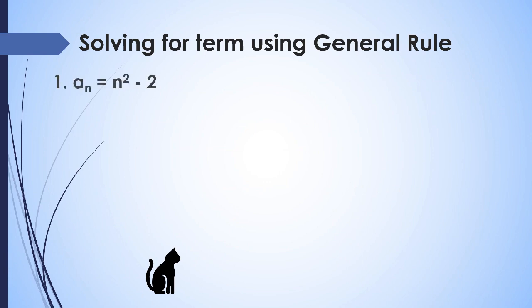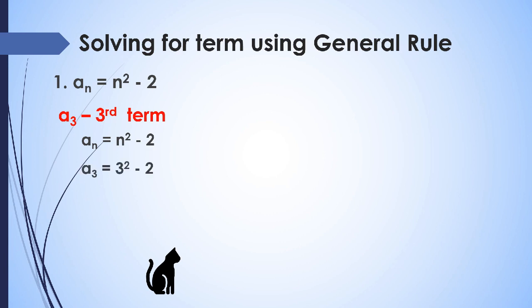Let's try a general rule of a sub n equals n squared minus 2. Suppose you want to solve for the third term, a sub 3. We get the general rule, replace a sub n with a sub 3, and replace n with 3. So a sub 3 equals 3 raised to 2 minus 2, which is 9 minus 2, giving a sub 3 equals 7. The third term of this sequence is 7.